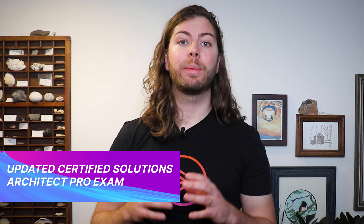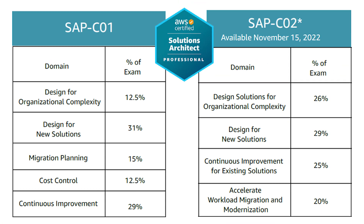As of November 15th, AWS has officially switched over to the latest version of their Certified Solutions Architect Professional Exam. I took, and thankfully passed, the updated version to give you the inside scoop. Most changes to the exam are minor — they removed the cost control portion and distributed it across the other four domains. The domains are now: Design Solutions for Organizational Complexity, Design for New Solutions, Continuous Improvement for Existing Solutions, and Accelerate Workload Migration and Modernization. Organizational complexity now takes up a much larger portion of the exam, moving from 12.5% to 26% of the total weight, mostly manifesting in more questions about managing multiple accounts with AWS Organizations and granting cross-account privileges to users and resources.